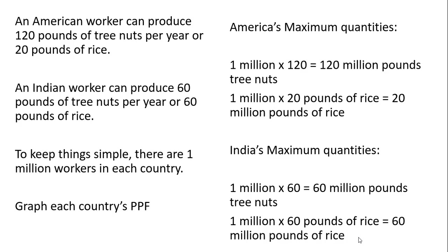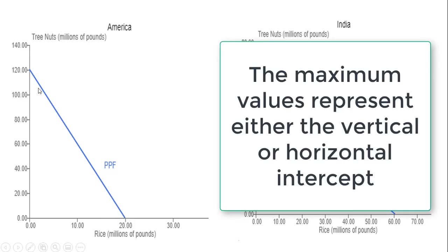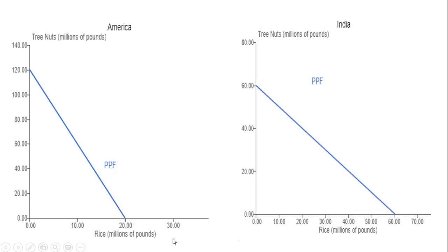Now let's construct the production possibilities frontiers. In America, you can see why we got those maximum values. We have tree nuts measured in millions of pounds on the y-axis and rice measured in millions of pounds on the x-axis. If all the workers in America produce nothing but tree nuts, they could produce 120 million pounds in the year. On the other hand, if all workers were allocated to producing rice, we could produce 20 million pounds of rice.